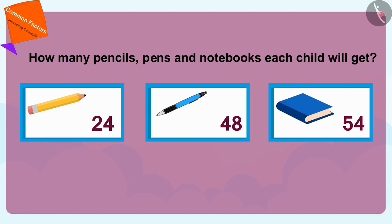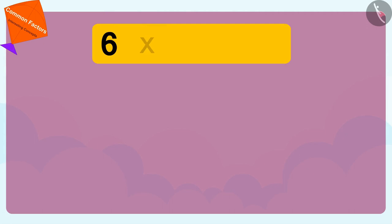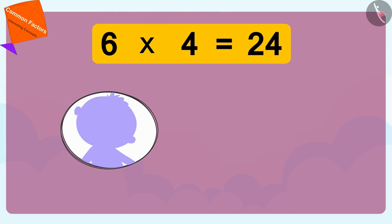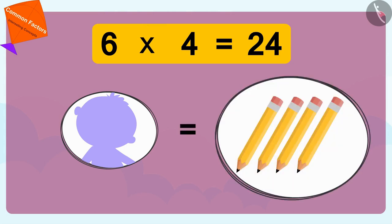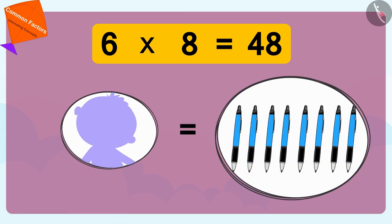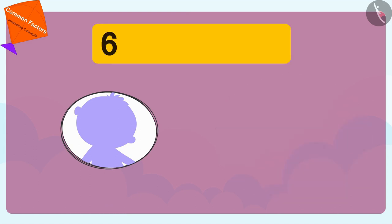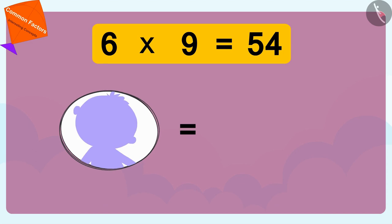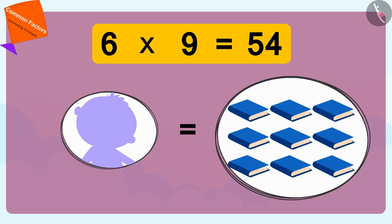If you want, you can stop the video and find the answer. Six times four is 24, so every child gets four pencils. Six times eight is 48, so each child gets eight pens. And six times nine is 54, so every child will get nine notebooks.